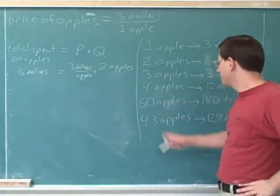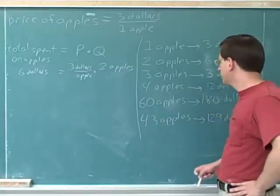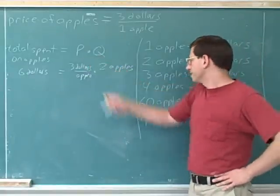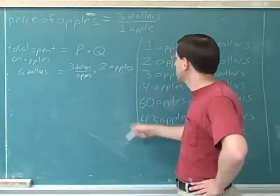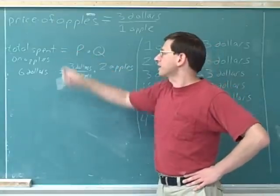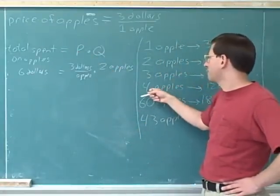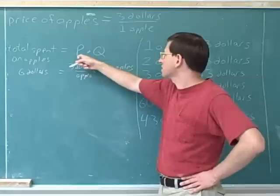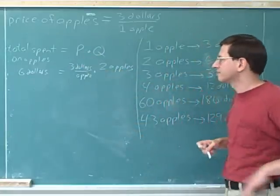So when you figured out how much 43 apples would cost, you could have done that by just plugging into this formula. You could have plugged in three for the price and 43 for the quantity, and then you would get the total spent. If you wanted to find the total cost of four apples, you could plug in four for the quantity and three for the price.